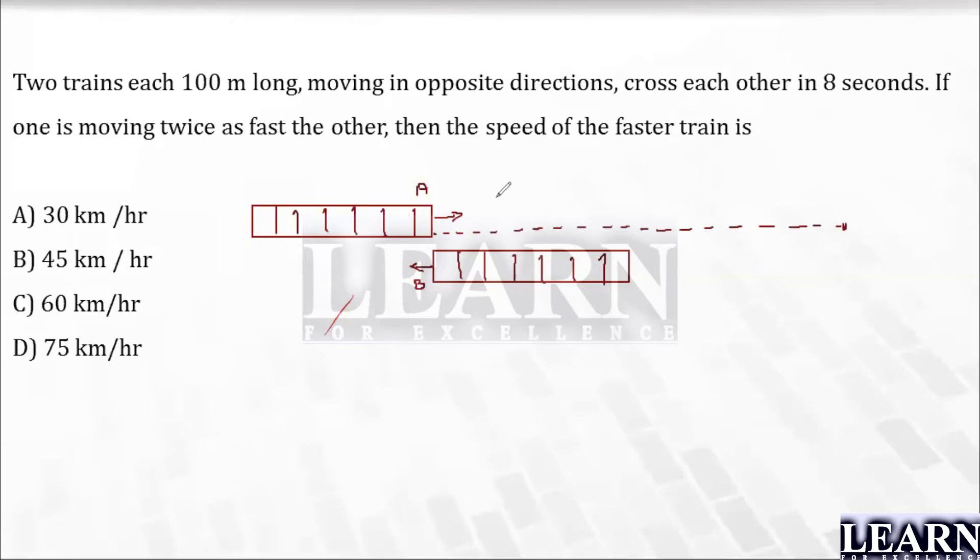In order to cross, it has to travel this distance also. Now look here - the train has traveled its own distance as well as the other train's distance, which says that a train has traveled 200 meters in 8 seconds.